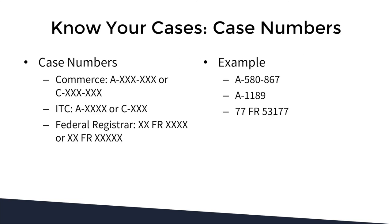Once you've confirmed your goods are subject to a case, you should know all the case numbers. There are three to pay attention to. First, the Department of Commerce case number — also referenced by U.S. Customs — structured as A-[3 digits]-[3 digits] or C-[same format]. The USITC has a similar structure: A-[4 digits] or C-[3 digits]. Finally, the Federal Register number is structured as two-digit space FR space and then four or five digits. For our example: A-580-867, A-1189, or 77 FR 53177. The two most important are the Department of Commerce number and the Federal Register number.